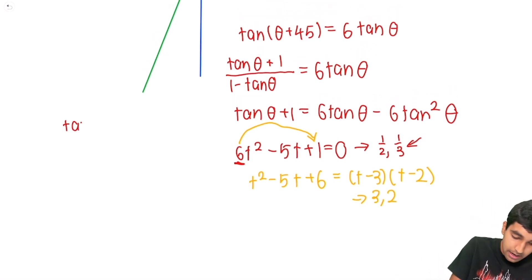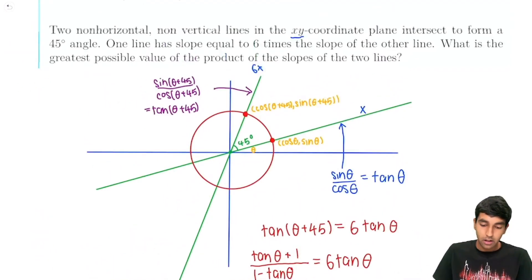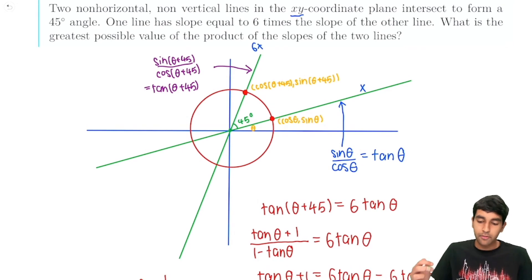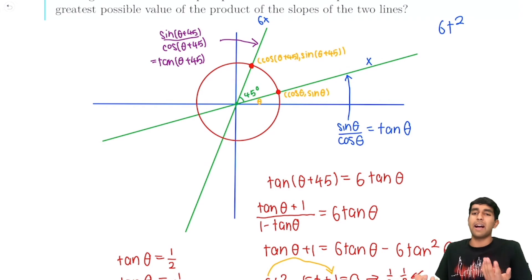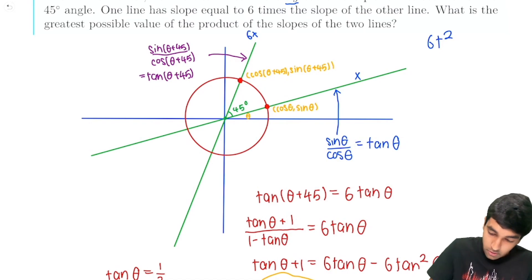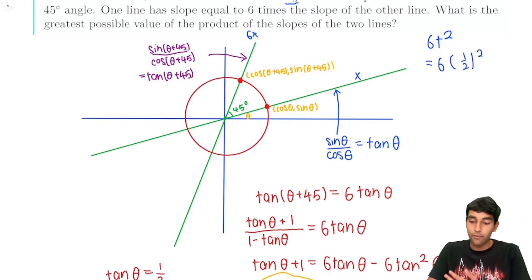So we have 1 half and 1 third are our roots for tangent of theta. So we have tangent theta equals half and tangent of theta equals 1 third. Okay, so now product of the slopes of these lines. We're looking for 6x squared, or we know x is just tangent of theta, so we're looking for 6t squared. So if we're trying to maximize 6t squared, we're just trying to maximize the magnitude of t essentially. So clearly over here, the maximum value is just 6 times half squared, that's 6 times 1 fourth, that's 3 halves.